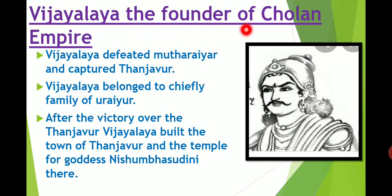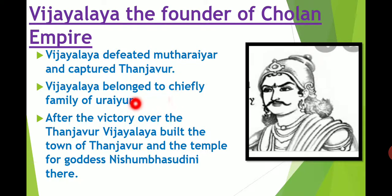Vijayalaya was the founder of the Chola Empire. He belonged to a chiefly family of Uriyar. Vijayalaya defeated Muthariyar and captured Tanjava. After his victory over Tanjava, Vijayalaya built the town of Tanjava and the temple of goddess Nisumbhasudini there.